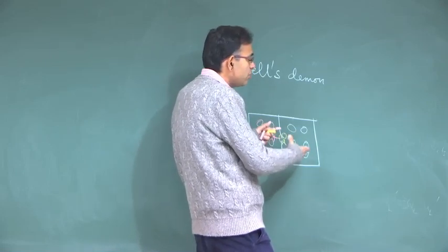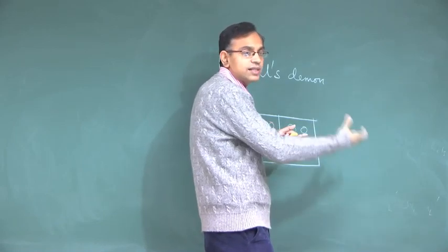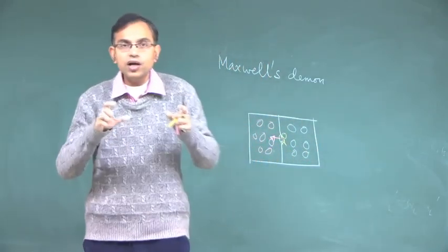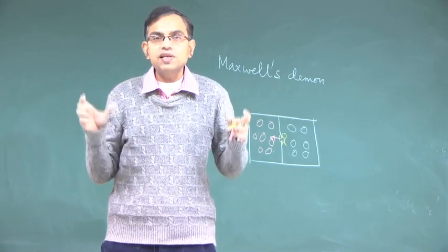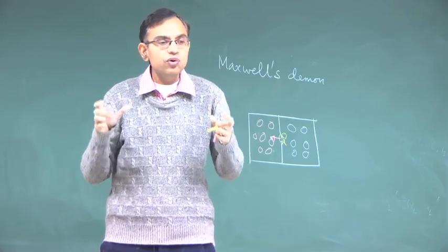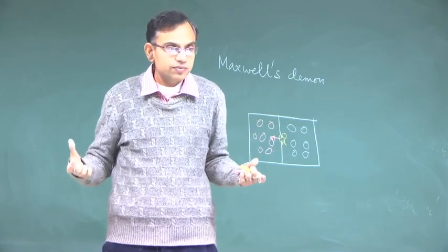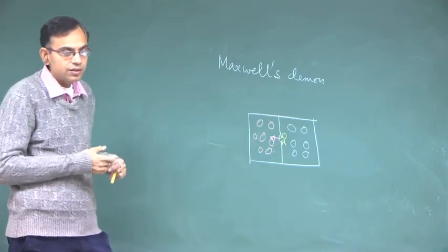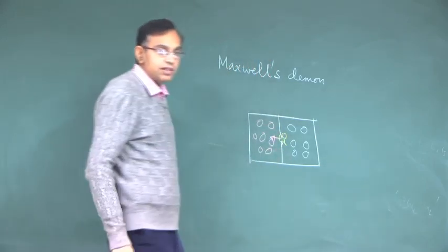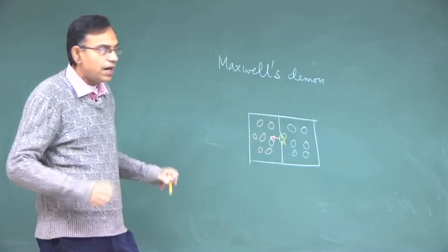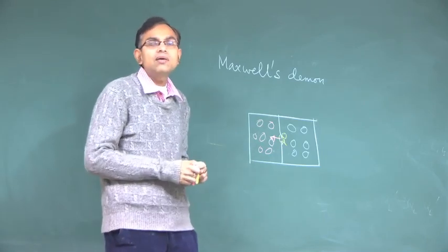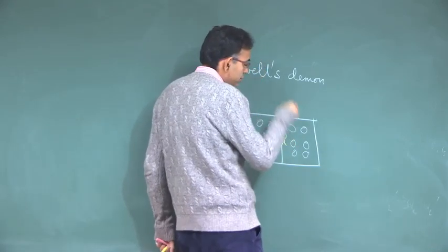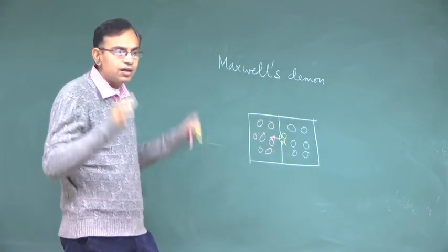The demon sees each molecule that goes across and checks its tag. If it is high temperature, it allows it to go to the red side. If it is lower temperature, it does not allow it to go that way. After some time, all the red molecules are on one side and all the white (low-temperature) molecules are on the other side. Out of nothing — just by the demon's decision-making — you have a separation of higher-temperature and lower-temperature molecules. As per the second law, this separation would require some work; otherwise they will spontaneously mix.